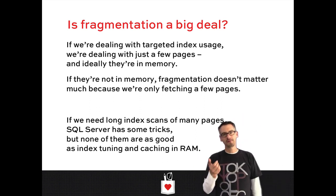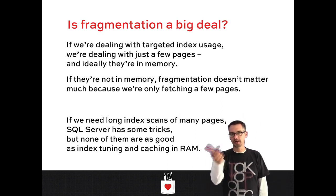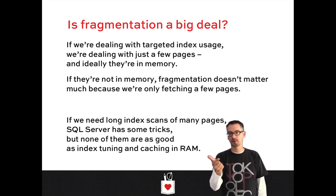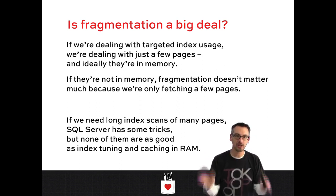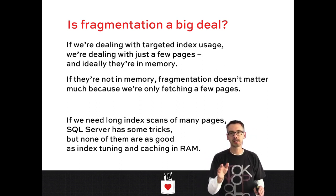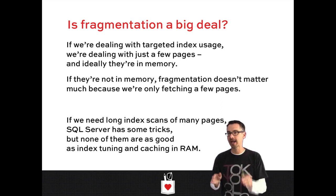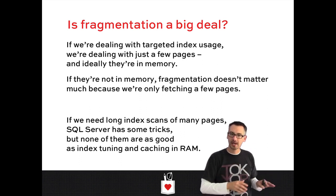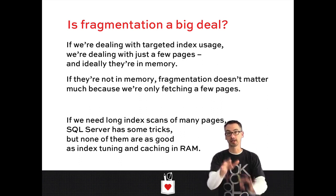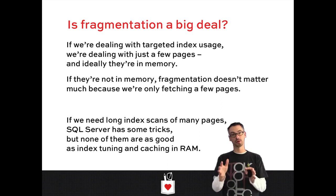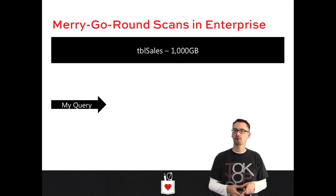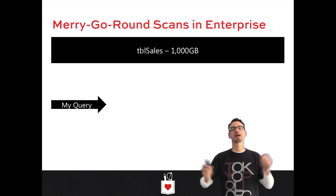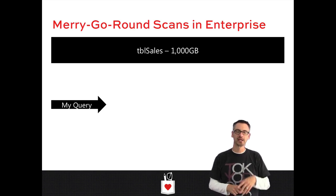Now, if you do put a lot of work into defragmentation and you spend a lot of money on Enterprise Edition, those tricks will work — but not nearly as well as index tuning and caching the database in RAM. But there's something really cool in Enterprise Edition that I don't think gets enough press, and it's called merry-go-round scans.